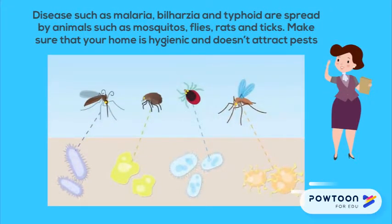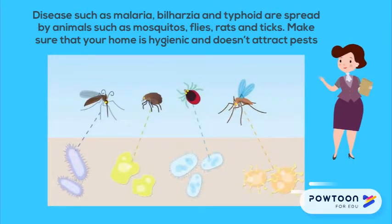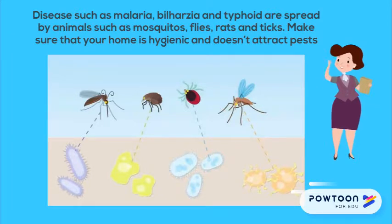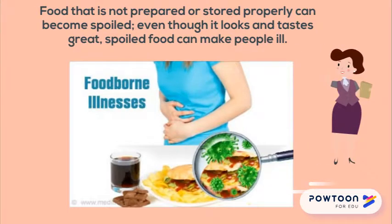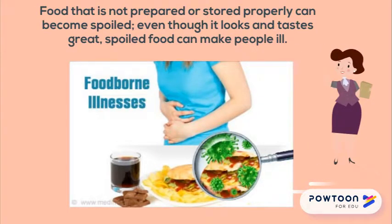Diseases spread by animals — diseases such as malaria, bilharzia and typhoid are spread by animals such as mosquitoes, flies, rats and ticks. Make sure that your home is hygienic and doesn't attract pests, as these types of creatures spread harmful diseases.